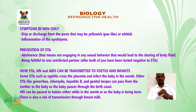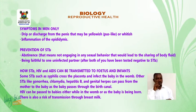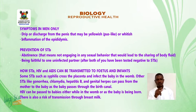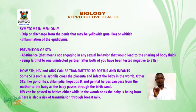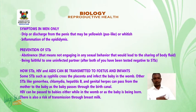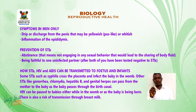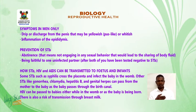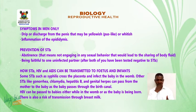Prevention of STIs: abstinence — meaning not engaging in any sexual behavior that will lead to the sharing of body fluids — and being faithful to one uninfected partner after both of you have been tested negative for STIs. How STIs, HIV, and AIDS can be transmitted to the foetus and infant: some STIs such as syphilis cross the placenta and infect the baby in the womb. Other STIs like gonorrhea, chlamydia, hepatitis B, and genital herpes can pass from the mother to the baby as the baby passes through the birth canal. HIV can be passed to babies either while in the womb or as the baby is being born, and there is also a risk of transmission through breast milk.